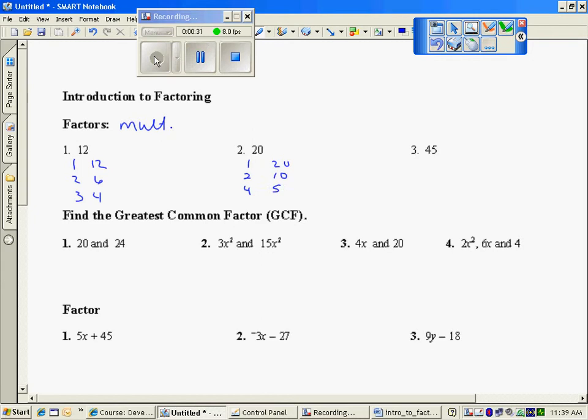So again, there are six factors that make 20. And factors of 45: 1 and 45, 3 and 15, 5 and 9. It looks like 45 has six factors as well.